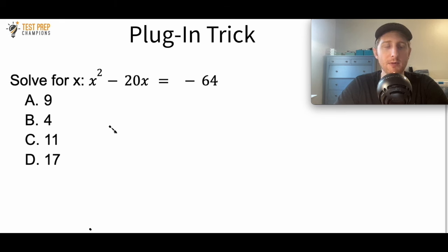Some people call it back solving, but basically I'm going to start with the 9 here and plug 9 into the equation for x and see what we get. If we get negative 64, we'll know that A is the correct answer. If we don't get negative 64, we're going to eliminate A and try B.